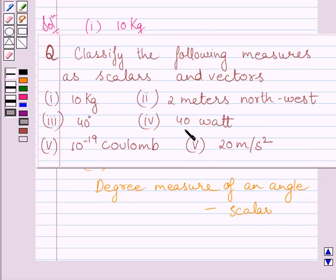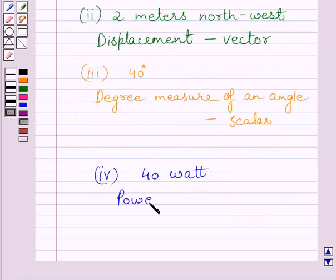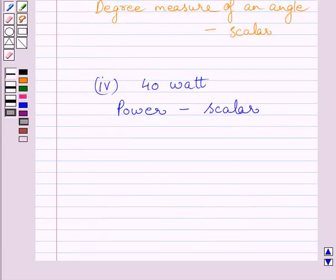The fourth part given to us is 40 watt. Watt is a unit of power, and power is a scalar quantity. Power has magnitude but no direction, so it is a scalar quantity.